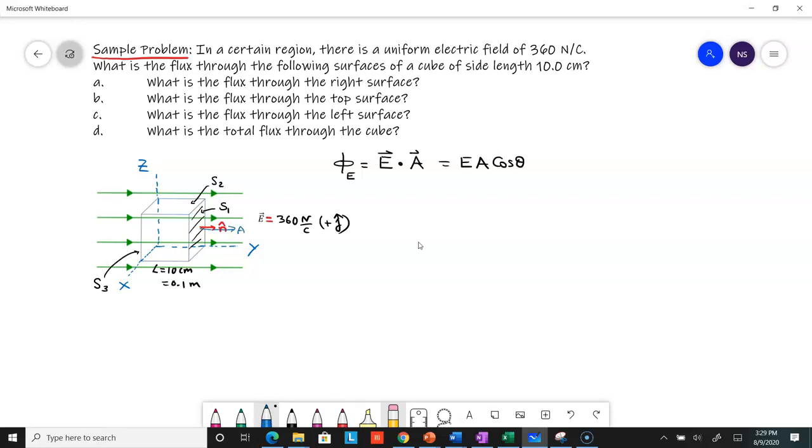Flux Φ_E through the right surface S1 equals E·A·cosθ. It's E times A times cosine of the angle.